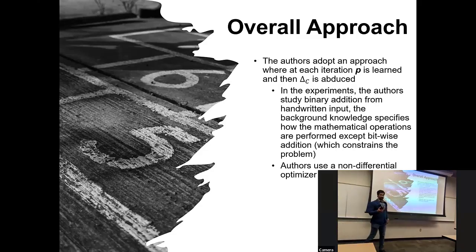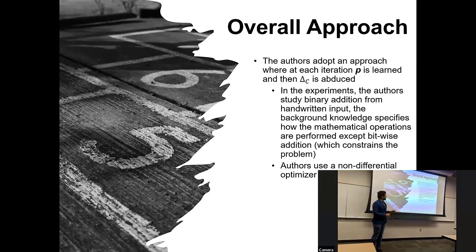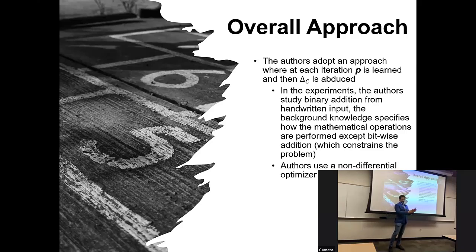Here's the basic idea: you have the perceptual model. The perceptual model returns all these primitives that now become facts. You take those facts, add them to the knowledge base, and then do standard abductive inference to find the delta C. The idea is that some of that perceptual information is going to be inaccurate, and we want to figure out a way to use delta C to update the labels to the perceptual model — somehow that delta C can help provide new labels, and then we can retrain the perceptual model with better labels.